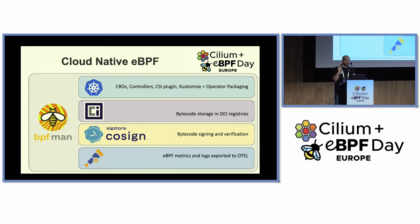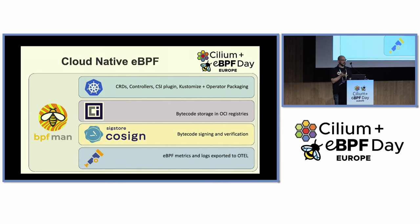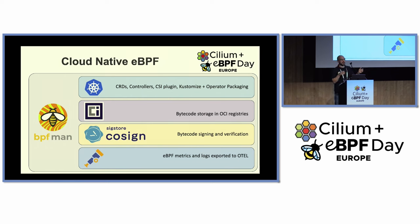Where some of the cool stuff comes in: in order to make this work in Kubernetes, the first problem we had to solve was how to take a BPF program written on my machine and get it onto all of the nodes in my cluster. We figured we already solved that problem for containers, so why not reuse the same pipeline? We're able to package BPF bytecode into container images, push that through a registry, and then BPFman is able to pull that down and load it into the kernel.